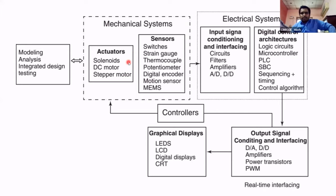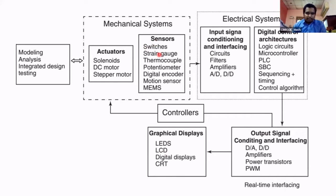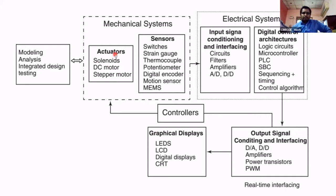The elements are sensors, actuators, signal conditioning, and controller. We have already completed sensors and signal conditioning processes. The remaining elements are actuators, digital control architecture, and controllers. So our next element of the mechatronics system is actuators. We have completed sensors and signal conditioning up to now. Now we will start discussing about actuators.